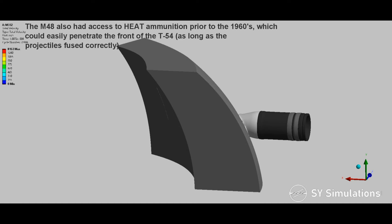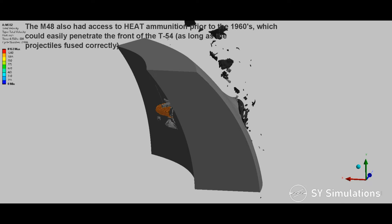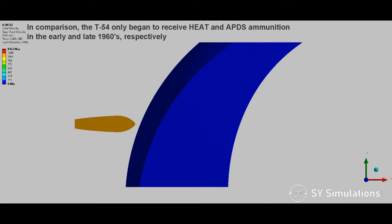The M-48 also had access to high-explosive anti-tank ammunition prior to the 1960s, which could easily penetrate the front of the T-54, as long as the projectiles fused correctly.